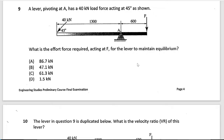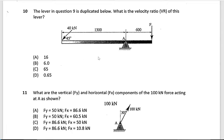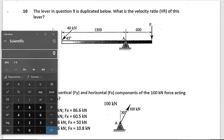It's a lever question — lots of kids get this wrong. What you need to do is convert the load to 45 degrees at the start. For the velocity ratio, you cannot use the given dimensions directly — you need to draw a triangle where the 1300 is the hypotenuse, and 1300 × sin 45° equals 1300 × 0.707.